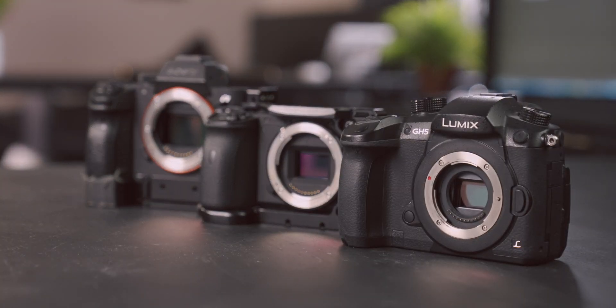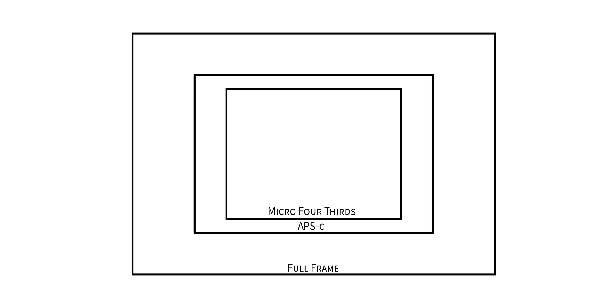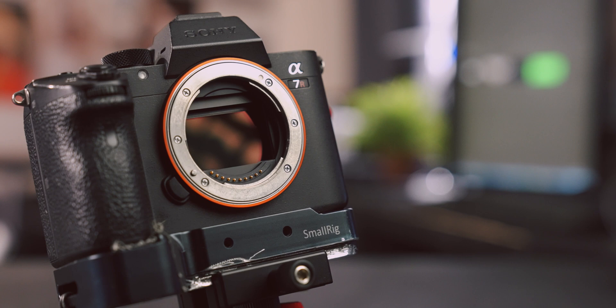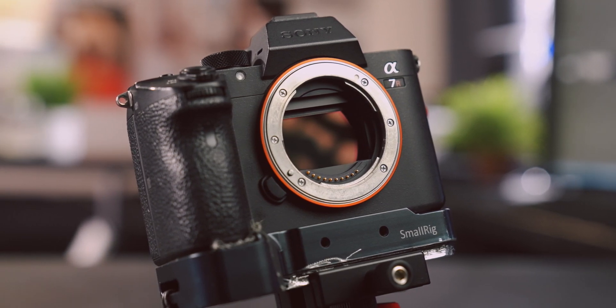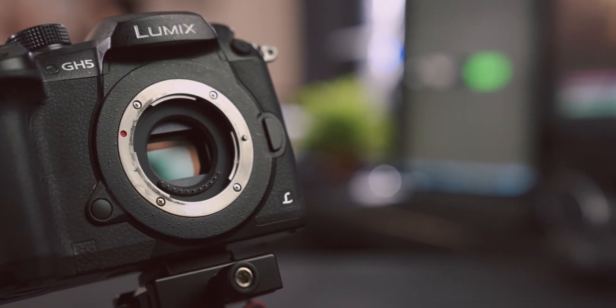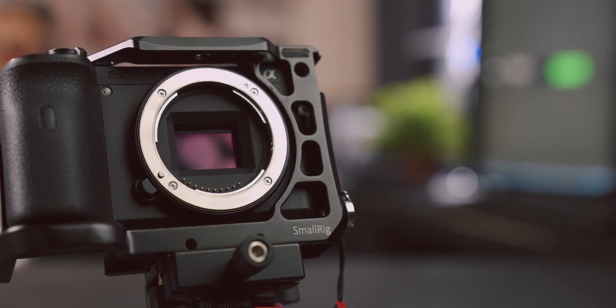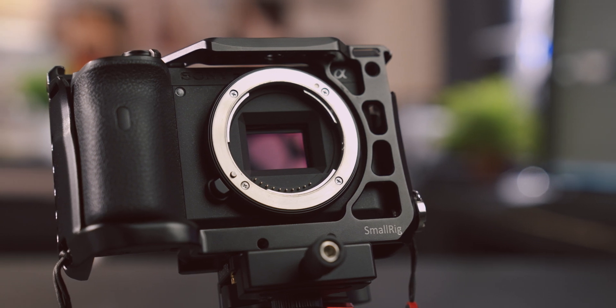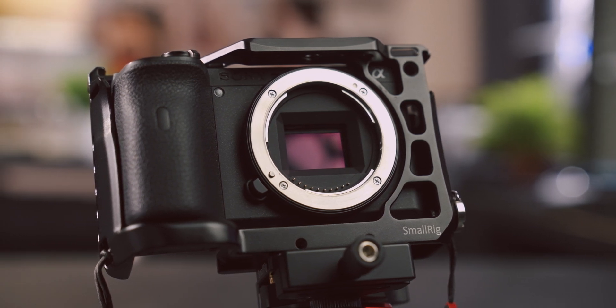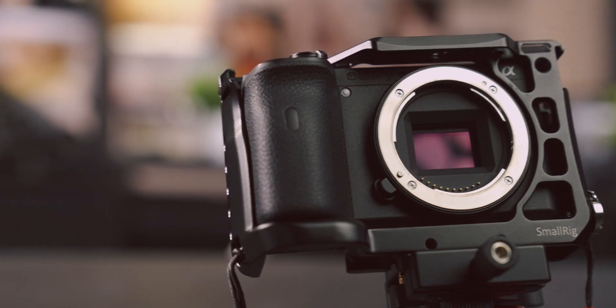I'm going to start off talking about camera sensor sizes and focus on the big three currently on the market: full frame, APS-C, and micro four thirds cameras. There are other options like medium format, one-inch sensors, and even phone cameras, but I'm going to talk about the most popular ones for DSLR and mirrorless cameras. For many years, full frame or 35mm sensors have been the most popular option among professional photographers. However, since digital photography became dominant, micro four thirds and APS-C cameras have become increasingly popular among casual photographers, enthusiasts, and even professionals, because their smaller sensor sizes allow for more compact bodies as well as lower costs.